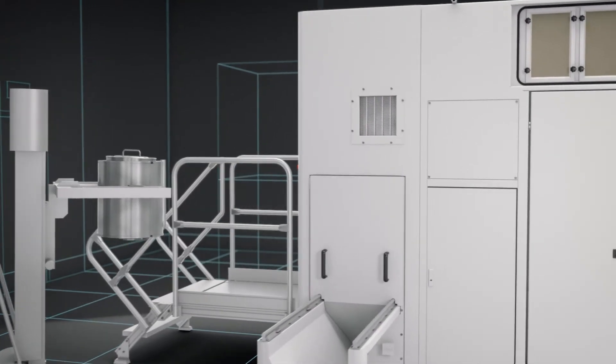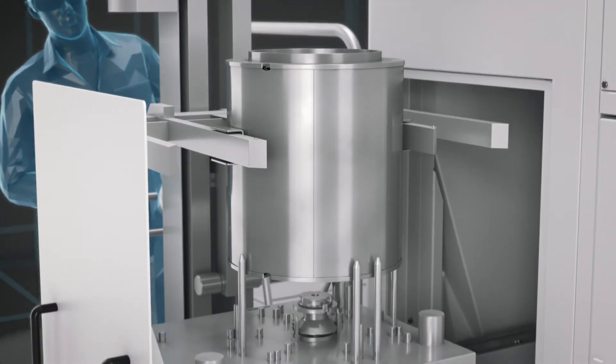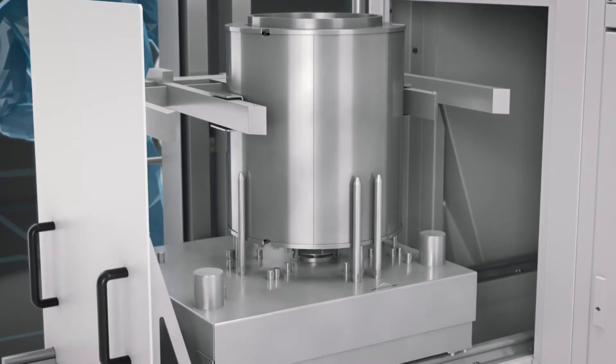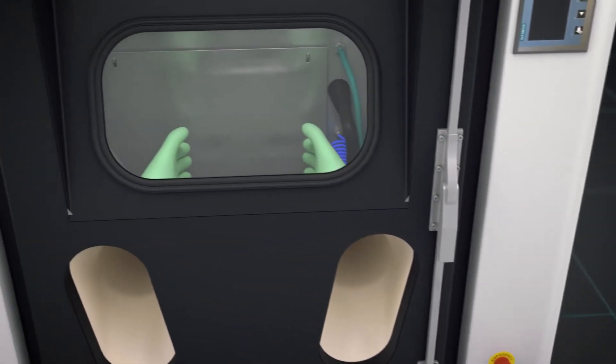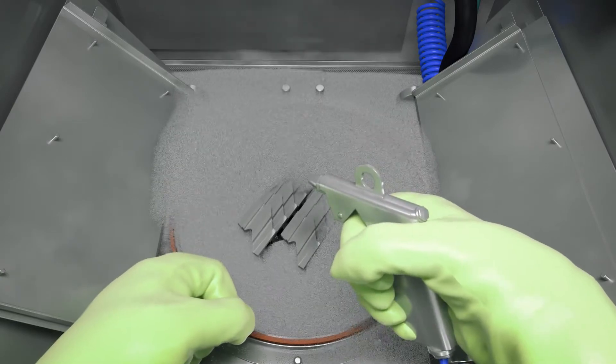When the part build is complete, the entire build tank is removed and placed in the Spectra powder recovery system docking station to maintain powder integrity. Once in position, the part is cleaned with compressed air and powder.